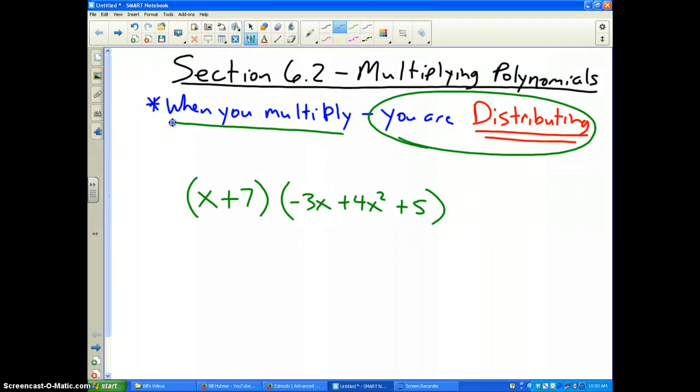Now, I wrote an example problem here, and if you would like to do your problems this way, please do. But basically, you have to take every term in the first polynomial and times it by every term in the second polynomial. Let me erase those lines here.